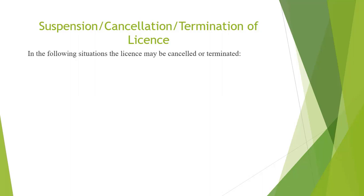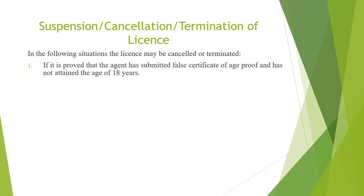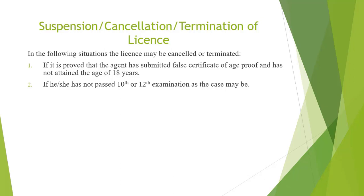Following are the grounds where your license can be cancelled by the authority. First, if after submitting your application form or even after updating your license, the authorities discover that the age proof you submitted was false. Second, if you have not passed the required educational qualification — 10th pass for areas with population up to 5,000 as per the last census, and 12th pass otherwise — then your license may be cancelled by the authority.